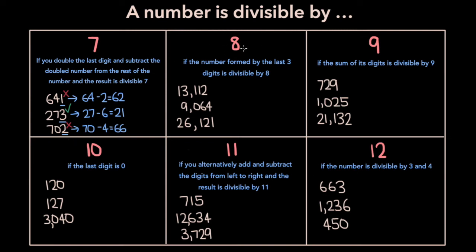A number is divisible by 8 if the number formed by the last three digits is divisible by 8. So for example, for 13,112, let's look at the last three digits, which is 112. 112 divided by 8: we get 1 times 8 is 8, subtract to get 32, and 32 divided by 8 is 4 exactly. Since 112 is divisible by 8, 13,112 is divisible by 8. Now let's look at the number 9064. The last three digits are 064, which is just 64. 64 is divisible by 8, so we know 9064 is divisible by 8.